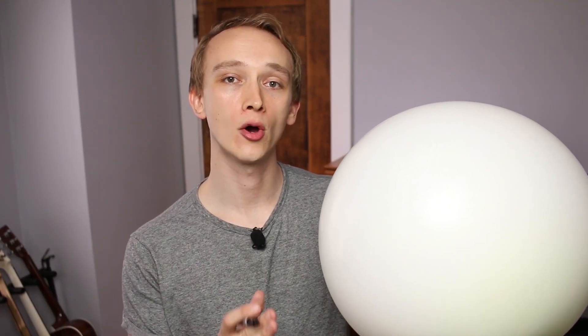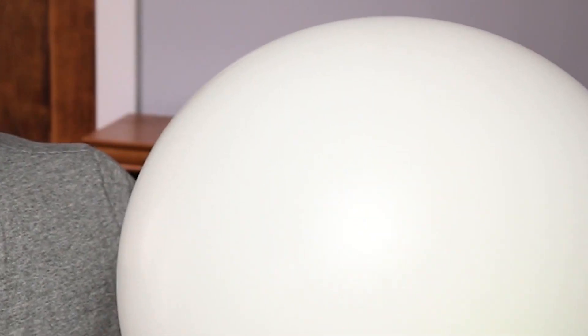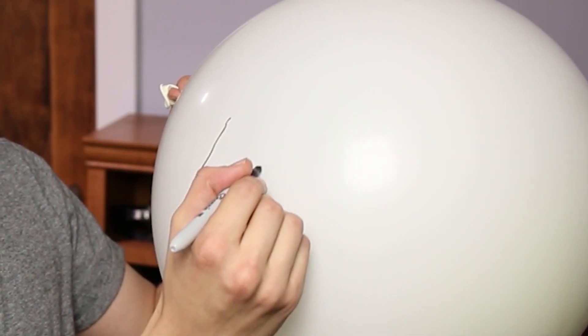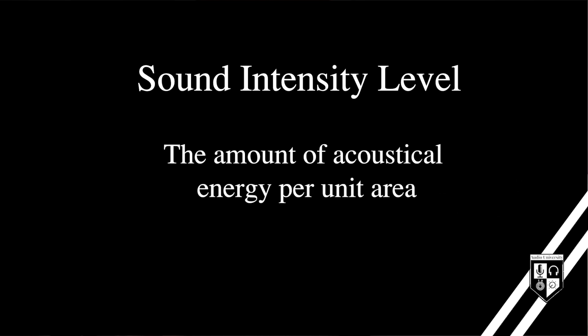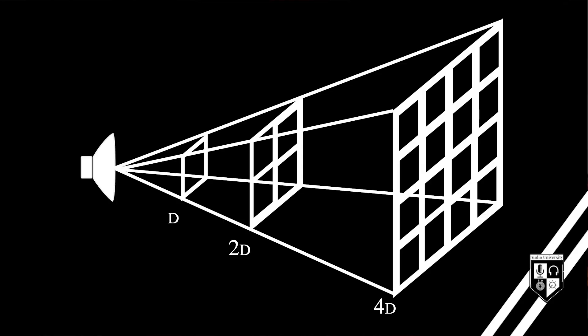If the surface area of the balloon becomes larger but the total amount of honey coating it stays the same, then the amount of honey per square inch will decrease as the balloon grows larger. This relates to sound intensity, because sound intensity describes the amount of energy per area of space. As a sound radiates away from its source, it creates a sphere of acoustical energy, and the surface area of that sphere grows the further the sound travels. The reduction of a sound's intensity over distance is explained by the inverse square law.